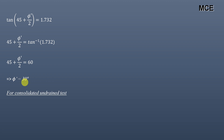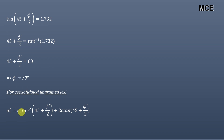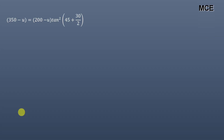Next, for the same clay specimen in the consolidated undrained triaxial test, we again apply the Mohr-Coulomb failure criterion. For this test, σ₁' = 350 minus u and σ₃' = 200 minus u. The value of φ' remains 30 degrees since it is the same clay specimen.